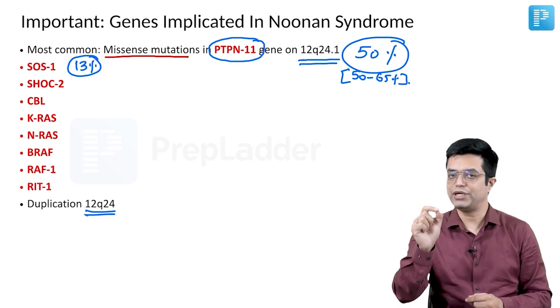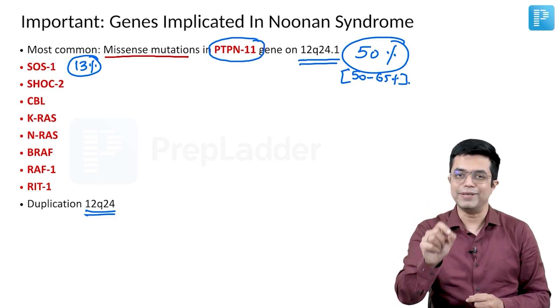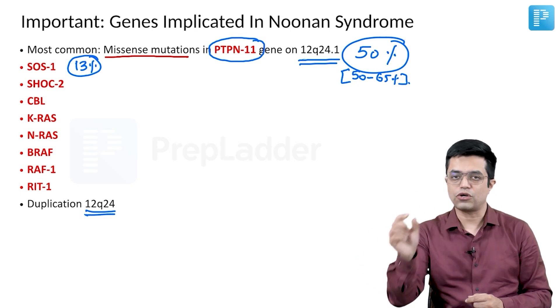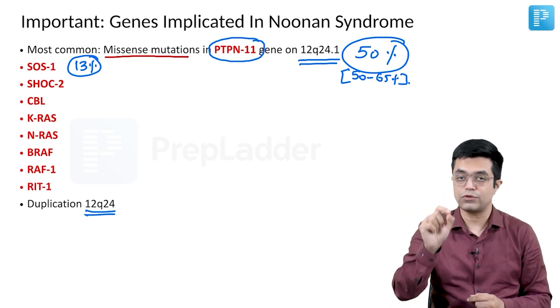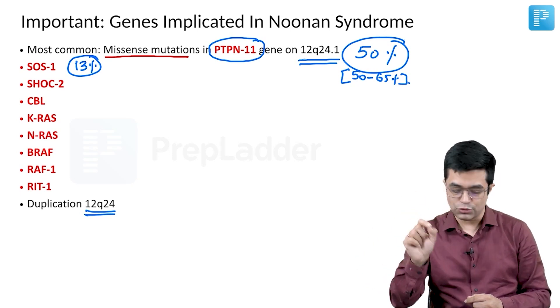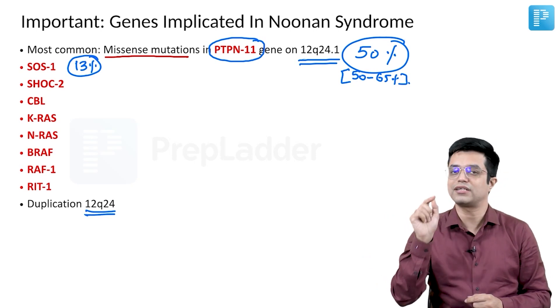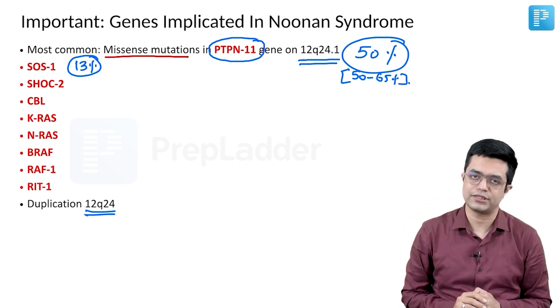Key exam points to remember: the most common gene mutation is PTPN11, the mutation type is missense, the chromosomal location is 12q24.1, and the second most common gene is SOS1.